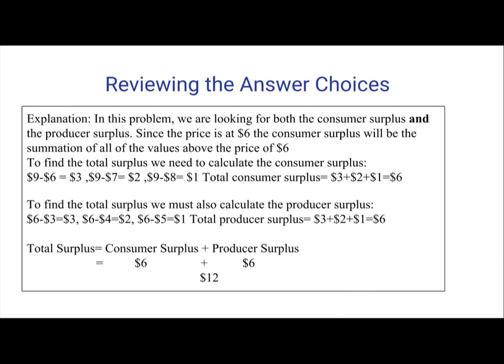Answer 1. In this problem, we are looking for both the consumer surplus and the producer surplus. Since the price is at $6, the consumer surplus will be the summation of all the values above the price of $6. We calculate: $9 minus $6 equals $3; $8 minus $6 equals $2; $7 minus $6 equals $1. So the total consumer surplus is $3 plus $2 plus $1, which equals $6.